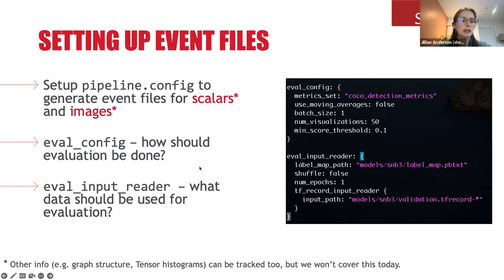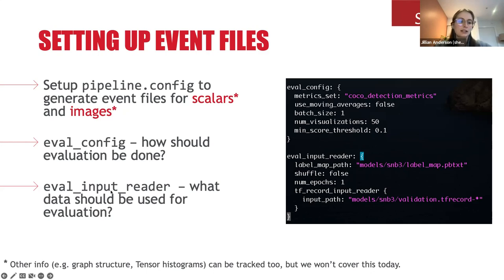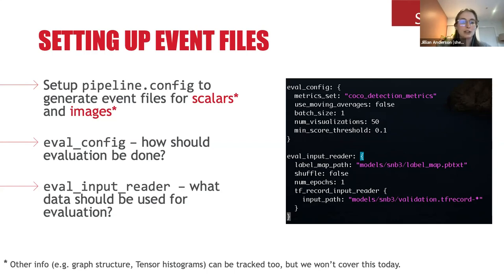There are two specifications to go through. The first is the eval config, which tells TensorFlow how evaluation should be done, what kinds of things should be evaluated, and what metrics should be used. The second is the eval input reader, which tells TensorFlow what data should be used for evaluation — as opposed to the train input reader, which handles training data. It's important to remember that evaluation data must be different from training data. TensorFlow won't stop you from using the same data, but you must avoid that to prevent overfitting.